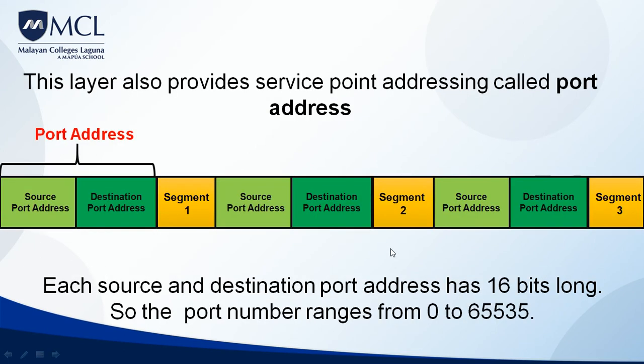The transport layer provides service point addressing called the port address. Port addresses have two types: the source port address — where the service is coming from — and the destination port address — where the service is going. Each port address is 16 bits long; combined, they are 32 bits. The port number ranges from 0 to 65,535.